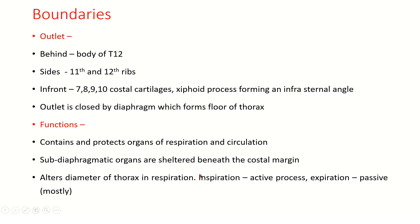The functions of the thorax include: acting as a cage to contain and protect the organs of respiration and circulation. A few sub-diaphragmatic organs are sheltered beneath the costal margin, like the liver, spleen, and upper part of the stomach. The thorax also alters the diameter during respiration — inspiration is an active process whereas expiration is passive, although expiration is also active during forced expiration.